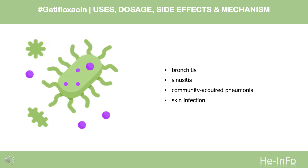Gatafloxacin is used for the treatment of bronchitis, sinusitis, community-acquired pneumonia, and skin infections such as abscesses and wounds, caused by S. pneumoniae, H. influenzae, S. aureus, M. pneumoniae, C. pneumoniae, L. pneumophila, and S. pyogenes.